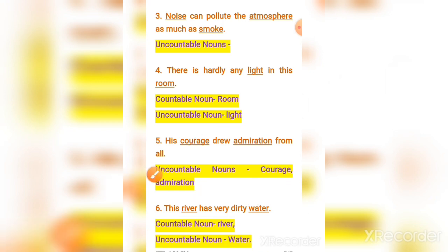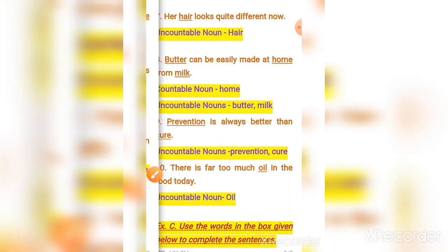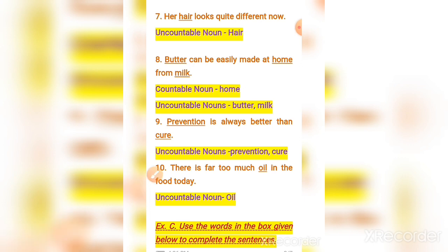Number seven: 'Her hair looks quite different.' The word 'hair' is an uncountable noun. Number eight: 'Butter can easily be made at home from milk.' Here 'home' is the countable noun, while 'butter' and 'milk' are uncountable nouns. Number nine: 'Prevention is always better than cure.' The words 'prevention' and 'cure' are uncountable nouns.